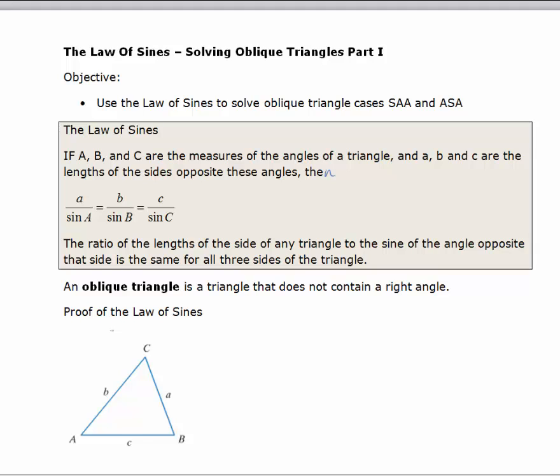In this lesson we're going to use the law of sines to solve oblique triangles. An oblique triangle is a triangle that does not have a right angle in it.